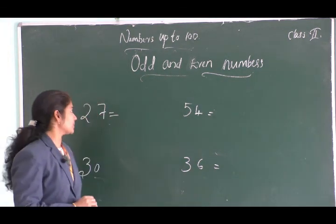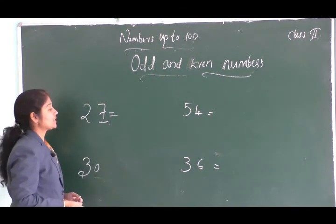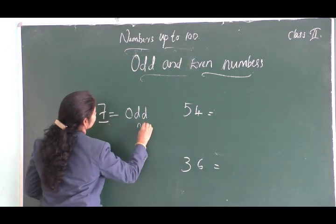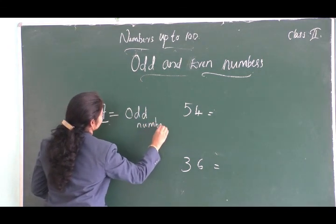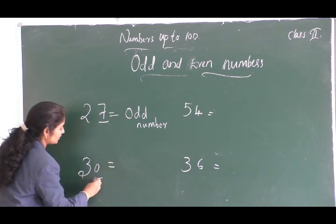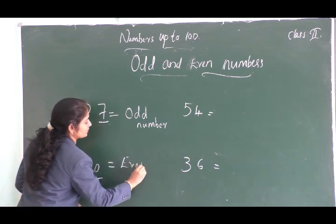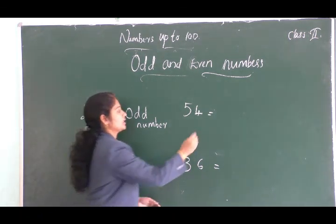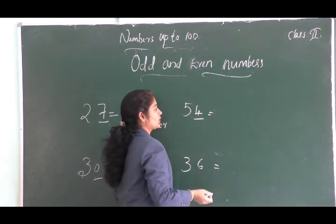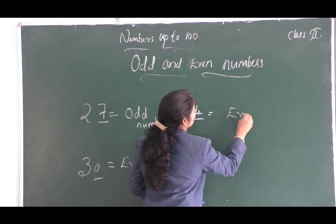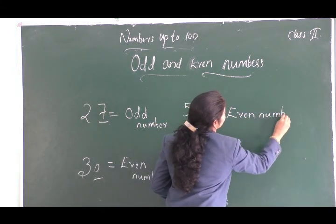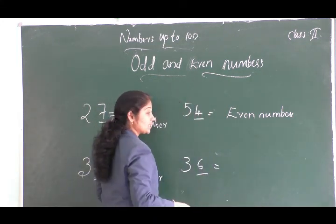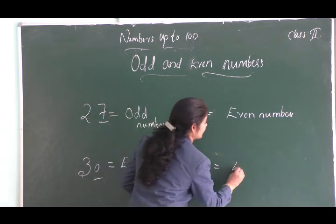Let's do some examples. Is 7 an odd or even number? Yes, it is odd. Is 0 an odd or even number? Yes, it is even. Here the last digit is 4 — is it odd or even? Even number. The last digit is 6 — is it odd or even? Yes, even number.